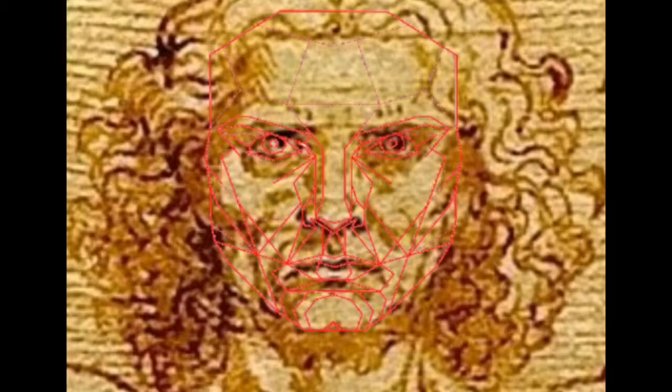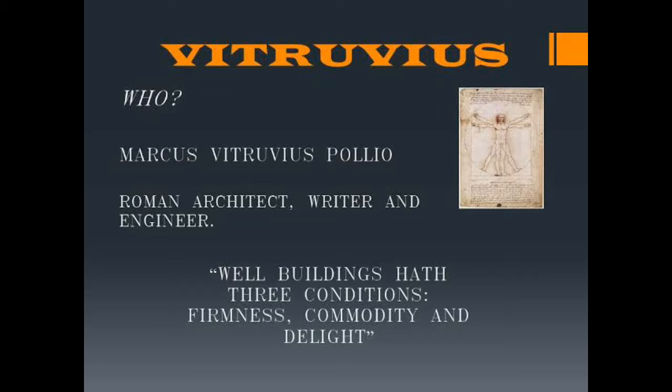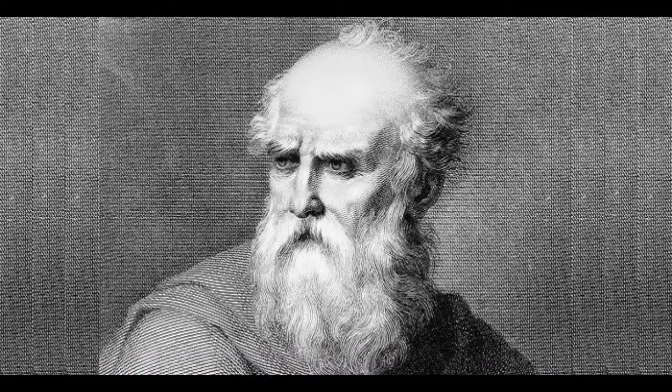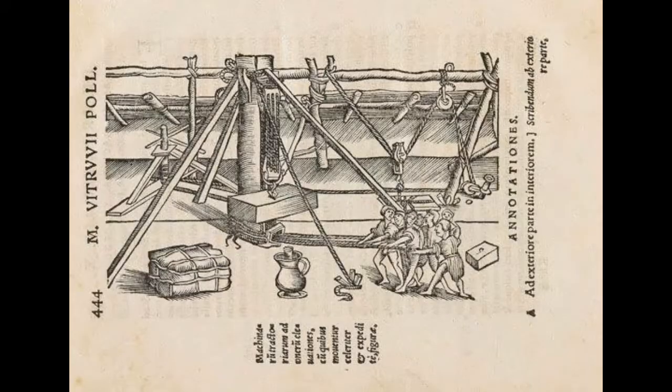But who was Vitruvius? Marcus Vitruvius Polio was born in the Roman Republic around 70 BC. He lived approximately 86 years. He was a Roman thinker whose theories about perfect architecture and human proportions became famous after the Renaissance because of da Vinci's drawing, the Vitruvian Man.